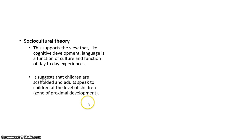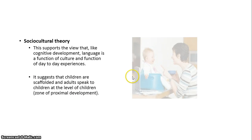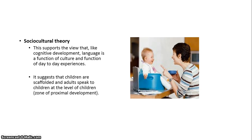We can now move on to the sociocultural theory of language development. This theory states that language is a function of culture and day-to-day experiences. As you can see in the picture, the mom is interacting with a little baby while feeding him or her. Through those daily exchanges, the mom could be saying, 'Oh, you like this? You like the porridge? You like the soup? You like the mashed potato?' — whatever she's feeding the child. And she would say it in a certain voice, using a moderately soft, slightly high-pitched tone.